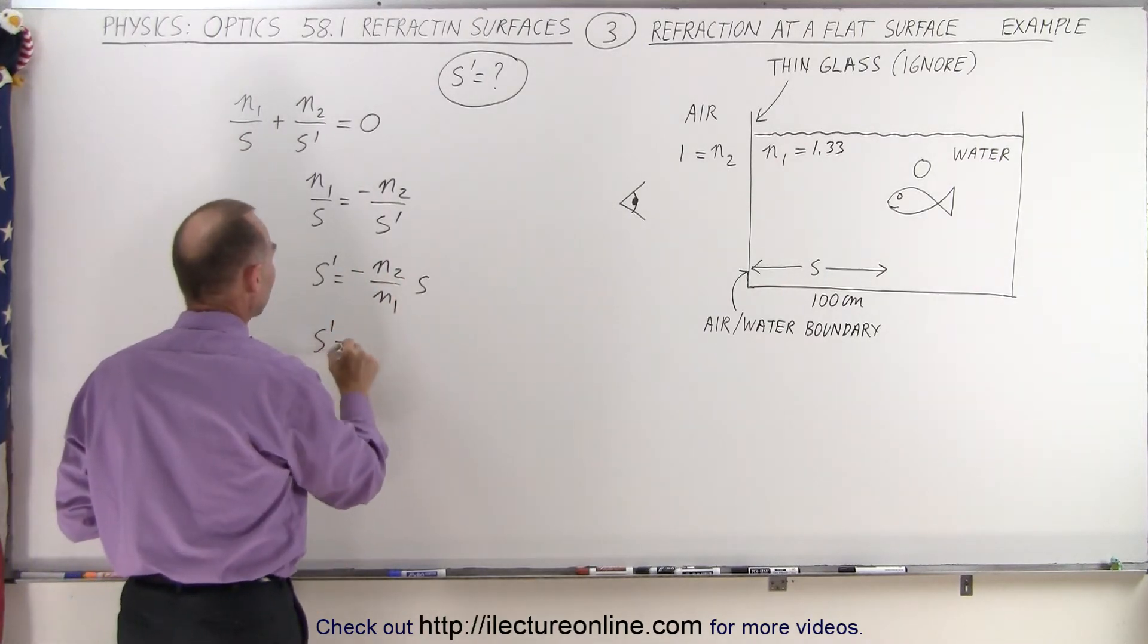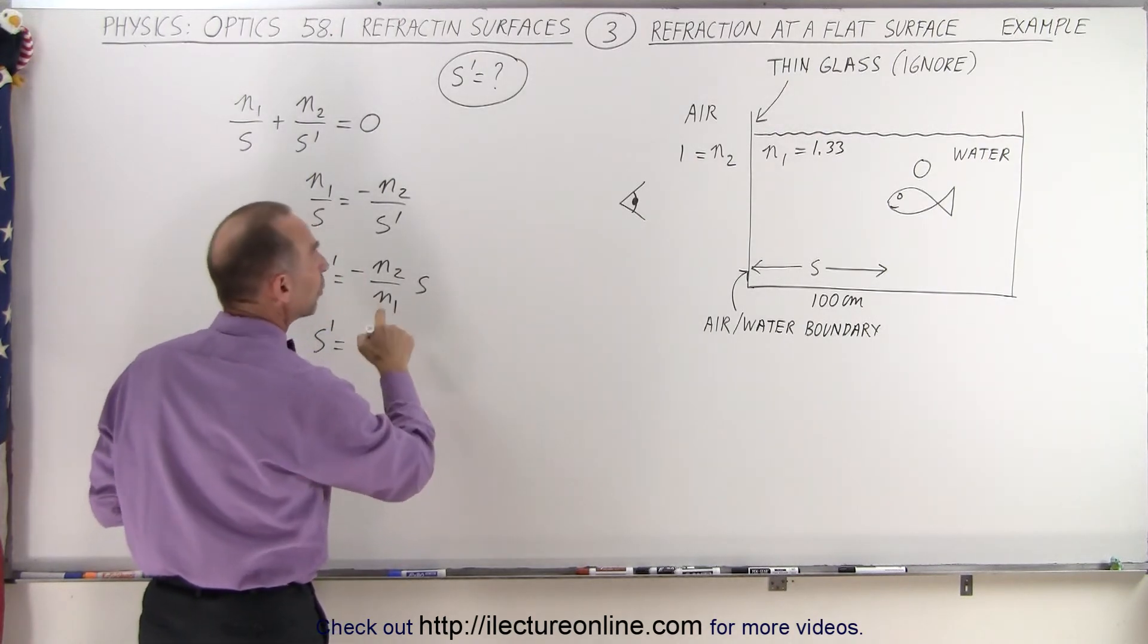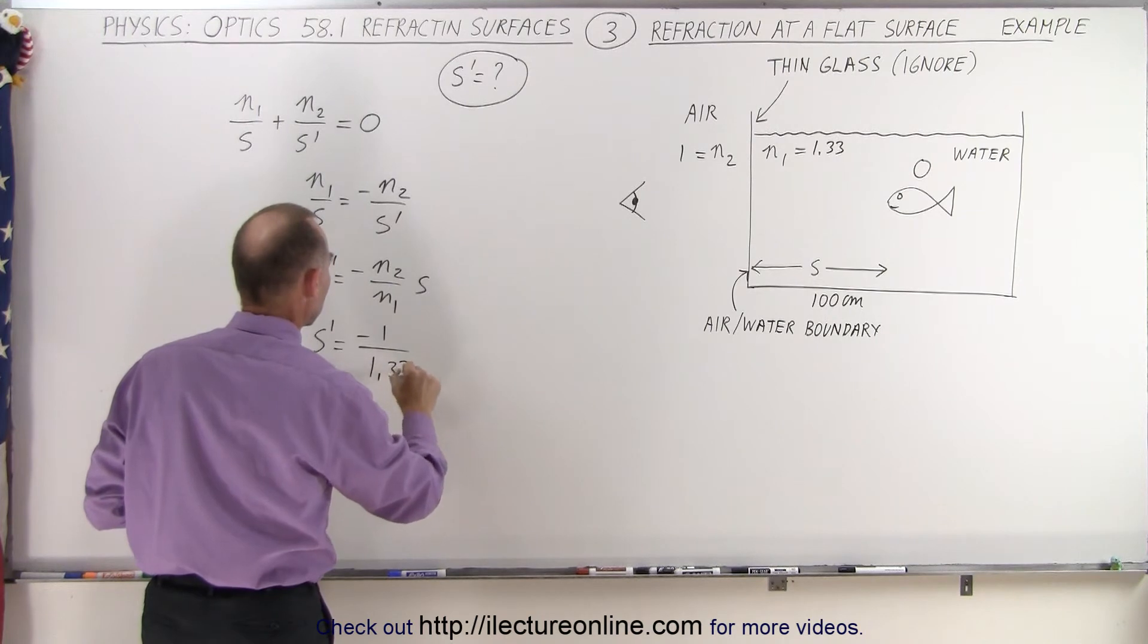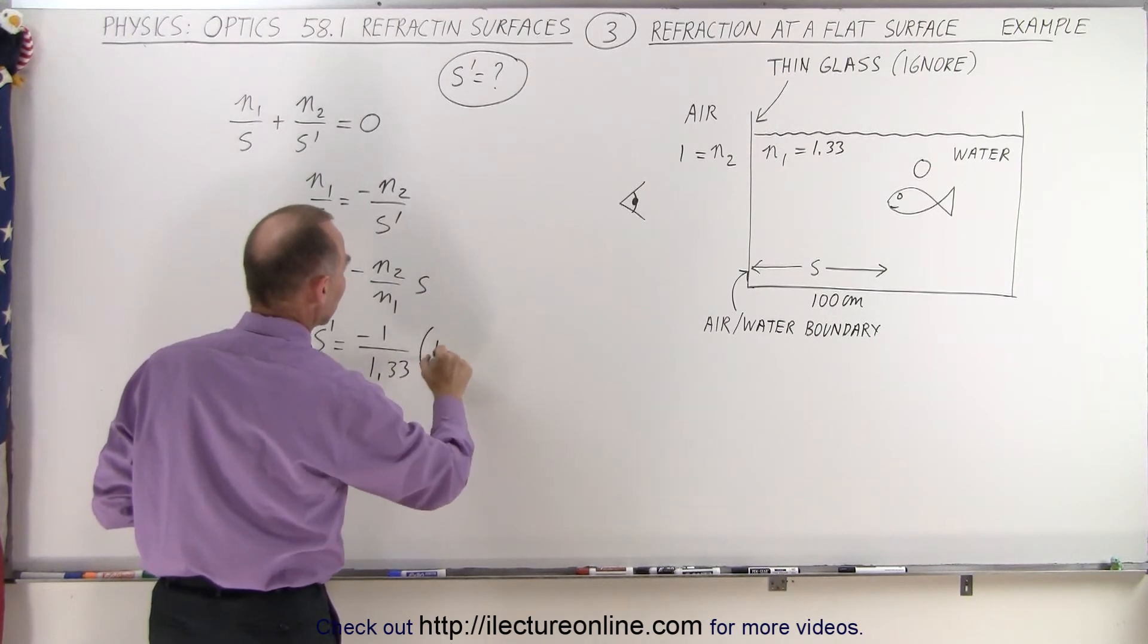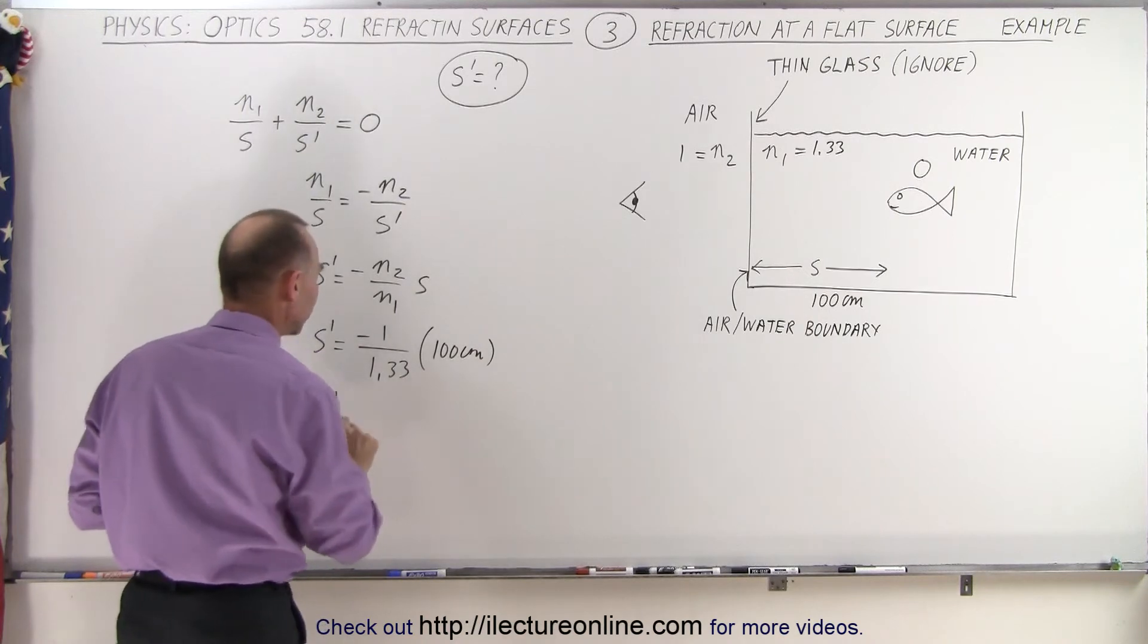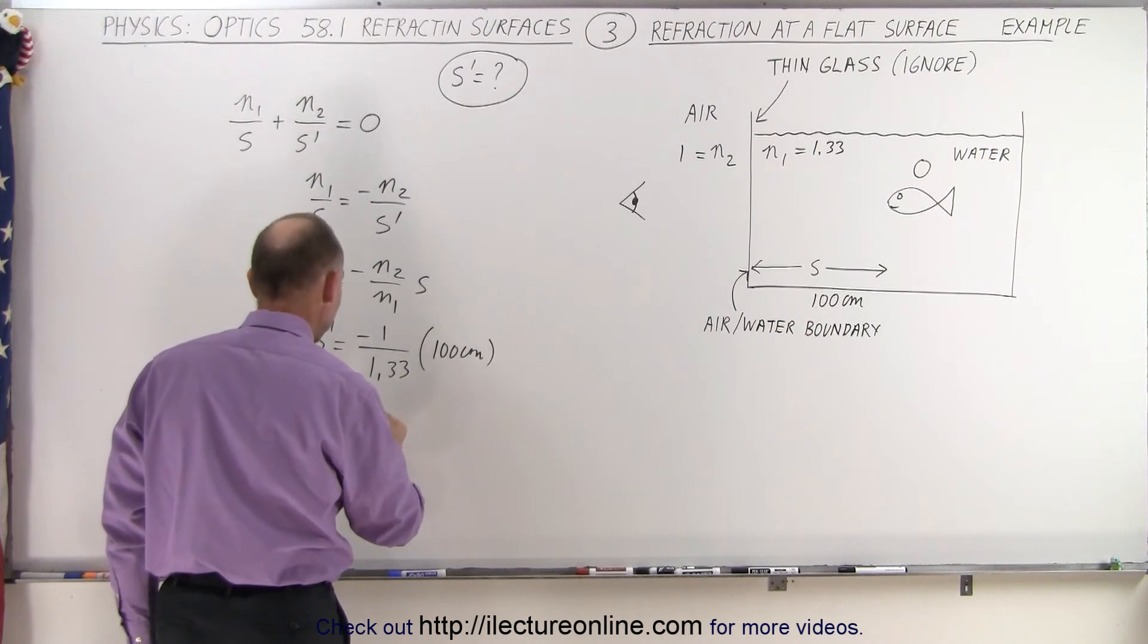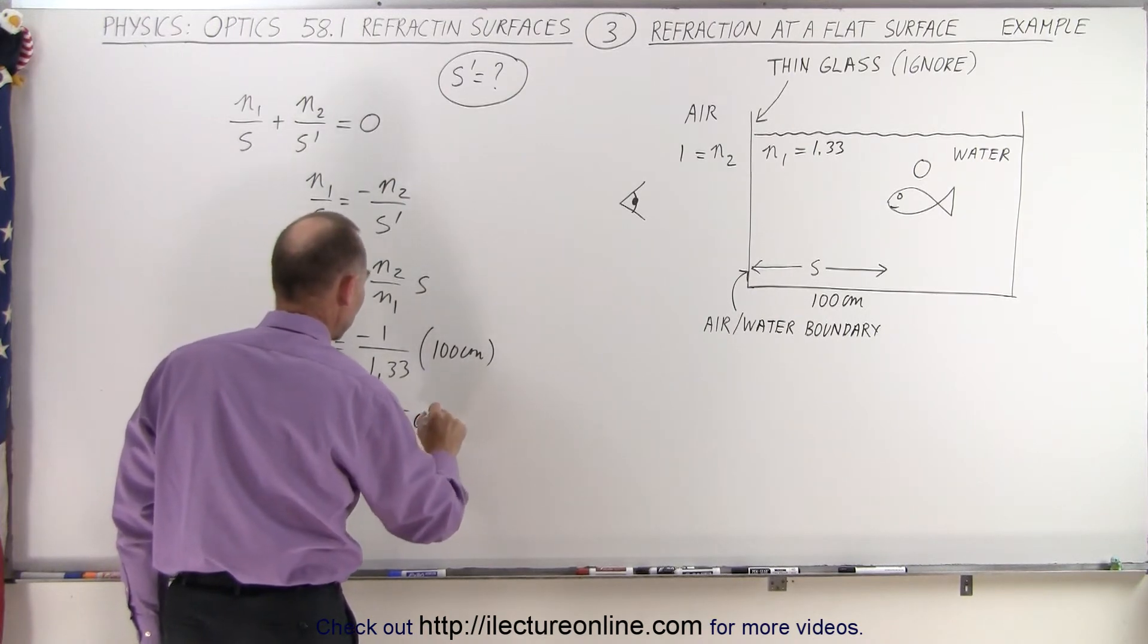Now let's go ahead and plug in what these are equal to. So S prime is equal to minus N2. N2 is 1, so that's minus 1 over N1, which is 1.33, times the distance of the object, which is 100 centimeters. And so S prime is equal to, that looks like it would be about 75 centimeters, so negative 75 centimeters.